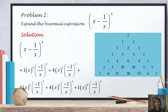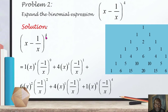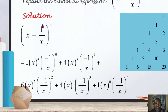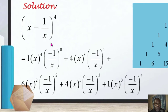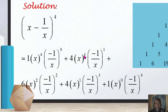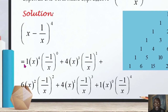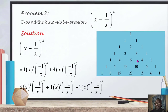Our first term is x, raised to the power of 4. Our second term — notice it includes a minus sign, so we include the minus sign — is minus 1 over x, raised to the power of 4. The first term reduces in power by 1: from 4 down to 3, then 2, then 1, then 0. The second term increases in power by 1: from 0 to 1, to 2, to 3, and eventually to 4. The coefficients from Pascal's Triangle are 1, 4, 6, 4, and 1.